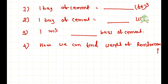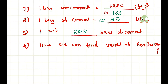First of all, I'm going to write down the answers. The answer to the first question is 1.226 — approximately you can take 1.23 cubic feet. One bag of cement equals approximately 35 litres. One meter cube requires 28.8 bags of cement to fill that box. To find the weight of reinforcement, we use the equation d squared divided by 162. I'm going to derive all of these one by one, so let's start without wasting time.